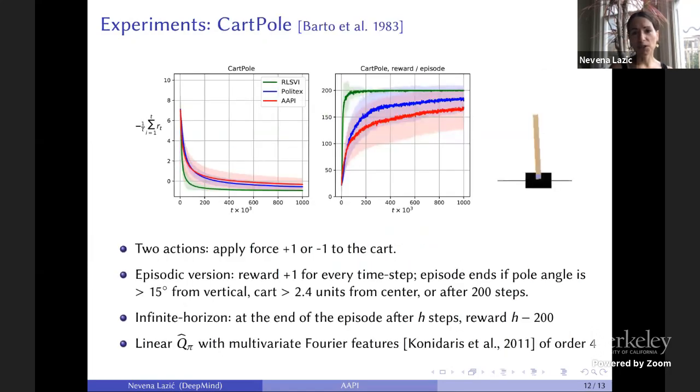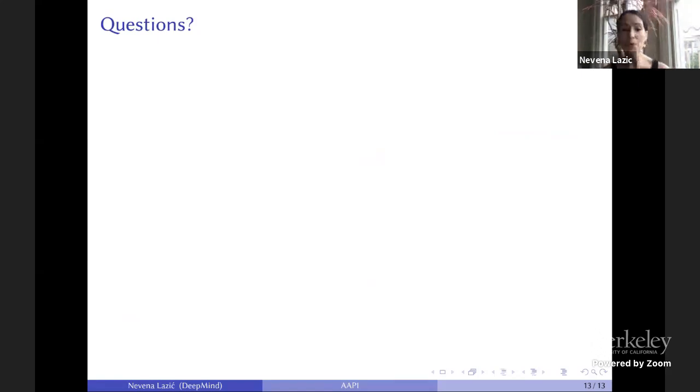But on cartpole, we saw slightly negative results. The standard deviations do overlap a little bit. This is averaged over 50 different runs. But in cartpole, AAPI was a little worse than Polytex. We're not quite sure why, but maybe in the case where observations change smoothly, this adaptive per-state learning rate doesn't help too much. That's the end of my talk. Any questions?